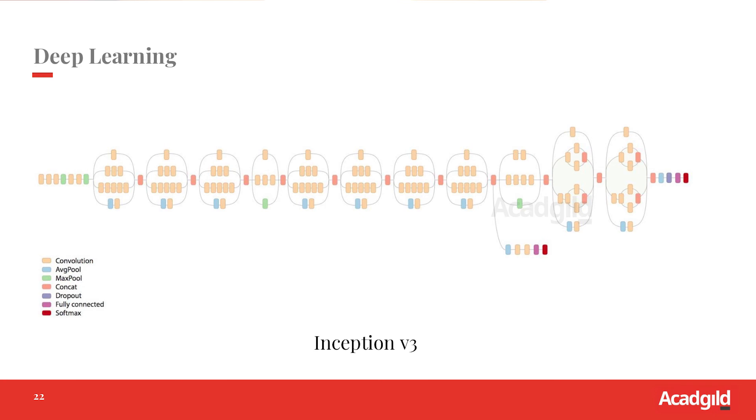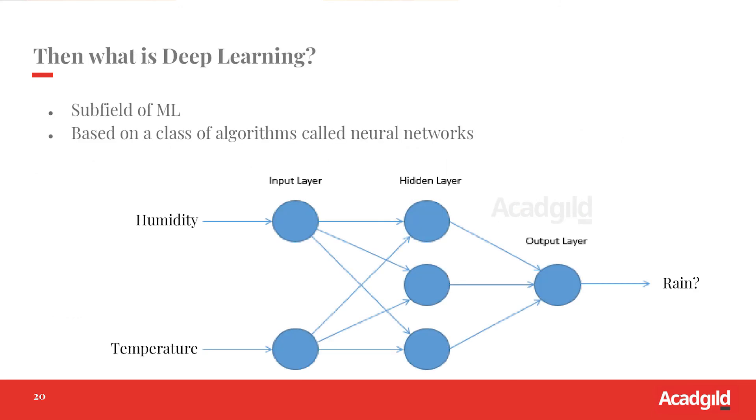What we call deep learning is nothing but a deeper architecture. This is what you call a neural network. If you have more layers, we call it deep learning.